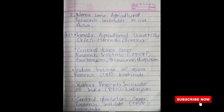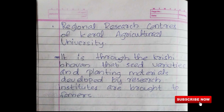Agricultural research institutes: Kerala Agricultural University (KAU), Mannuthi, Thrissur. Central Tuber Crops Research Institute (CTCRI), Sreekariyam, Thiruvananthapuram. Indian Institute of Spices Research (IISR). Rubber Research Institute of India (RRII). Central Plantation Crops Research Institute (CPCRI), Kasaragod. Regional Research Centers of Kerala Agricultural University. It is through the Krishibhavan that seed varieties and planting materials developed by research institutes are brought to farmers.